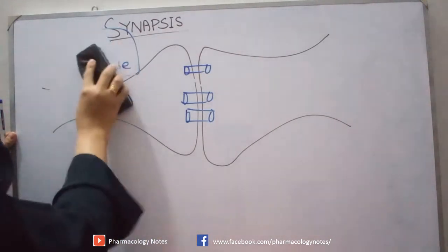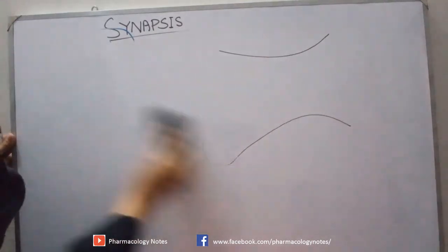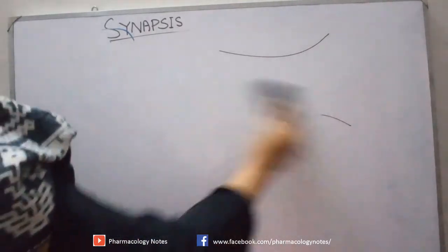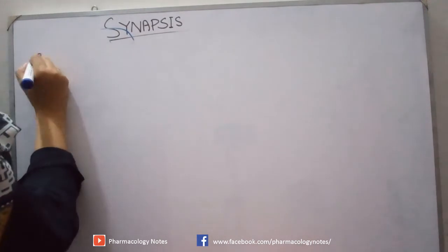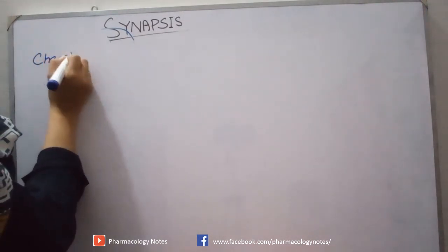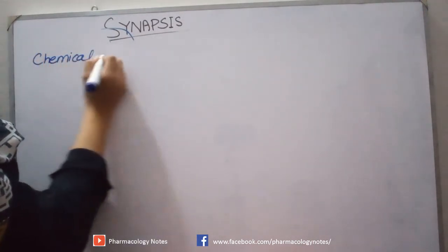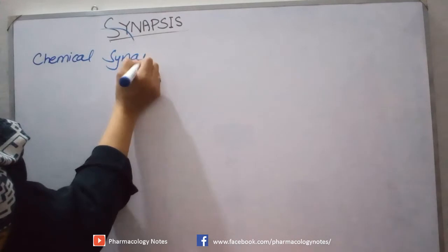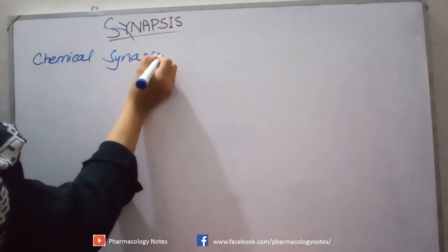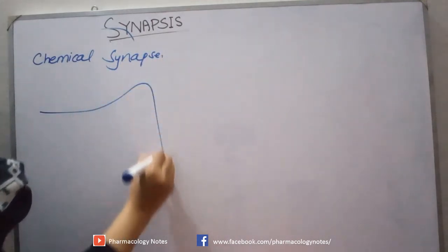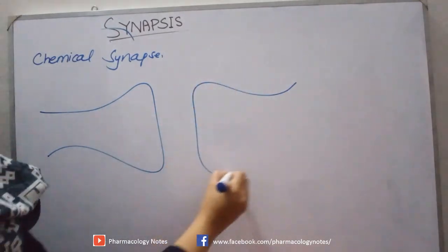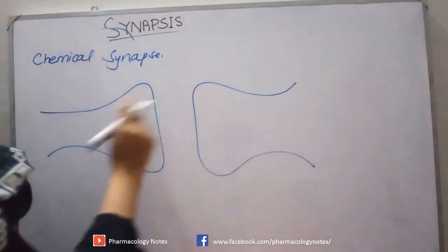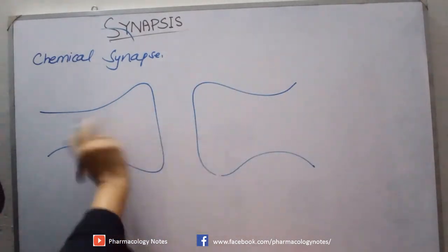The second type, which we study extensively, is the chemical synapse. Whenever we have a presynaptic neuron and a post-synaptic neuron and there is no direct communication between them, this involves chemical signaling — that is the chemical synapse.